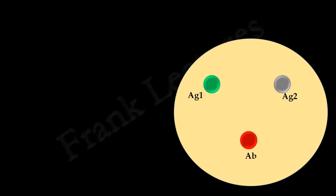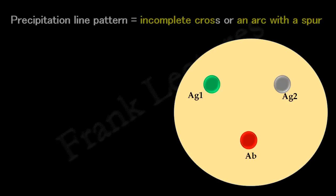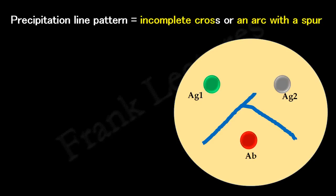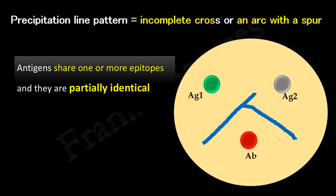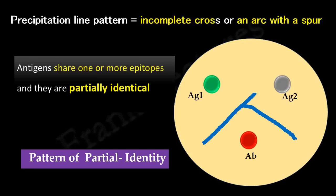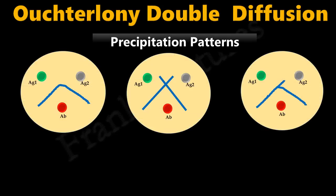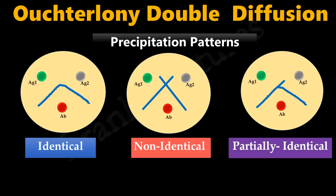So in a double immunodiffusion assay, if a precipitation band with a spur is formed, we can interpret that the given antigens share one or more epitopes and are partially identical. This pattern is known as the pattern of partial identity. In summary, by looking at the patterns of precipitation lines formed in a double immunodiffusion assay, we can interpret whether the given antigens are identical, non-identical, or partially identical.